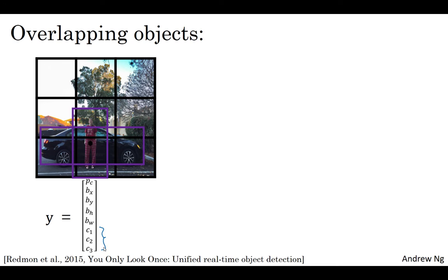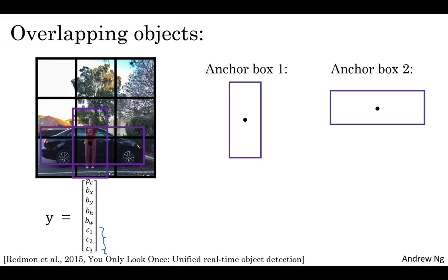With the idea of anchor boxes, what you're going to do is pre-define two different shapes called anchor boxes or anchor box shapes. And what you're going to do is now be able to associate two predictions with the two anchor boxes. In general, you might use more anchor boxes, maybe five or even more, but for this video I'm just going to use two anchor boxes to make the description easier.